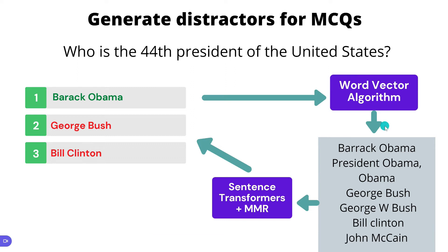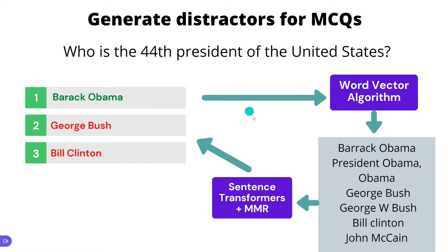Using word vector algorithms, then sentence transformers to convert each word into a vector space — and note that although we say sentence transformers, it works for single words or multi-word phrases like Barack Obama — and once we have the vector embeddings, we use Maximum Marginal Relevance to filter the most diverse ones and get our distractors. We will see that in code just now.